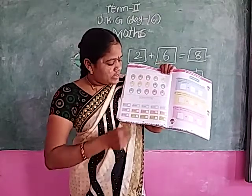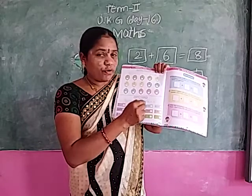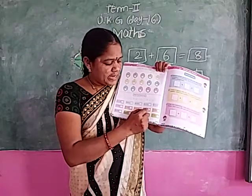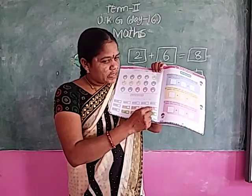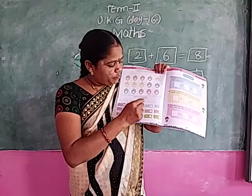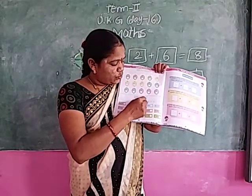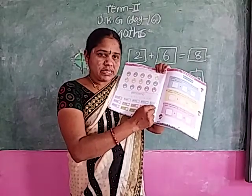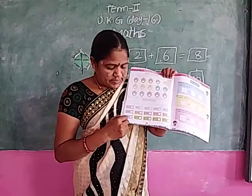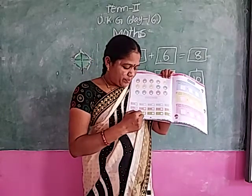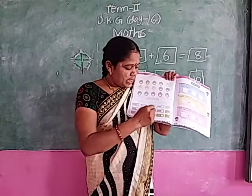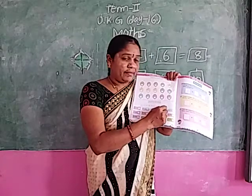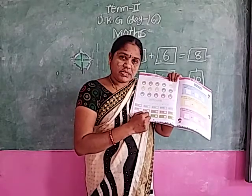6 plus 4 — circle the 6 on the number line, move forward 4 times: 1, 2, 3, 4. Where are we? The answer is 10. Next: 5 plus 5 — circle the 5, move forward 5 times: 1, 2, 3, 4, 5. Where are we? 5 plus 5 equals 10. Next: 5 plus 0 — write the answer: 5. Next: 3 plus 7 — circle the 7, move forward 3 times: 1, 2, 3. Where are we? 10. 3 plus 7 equals 10.